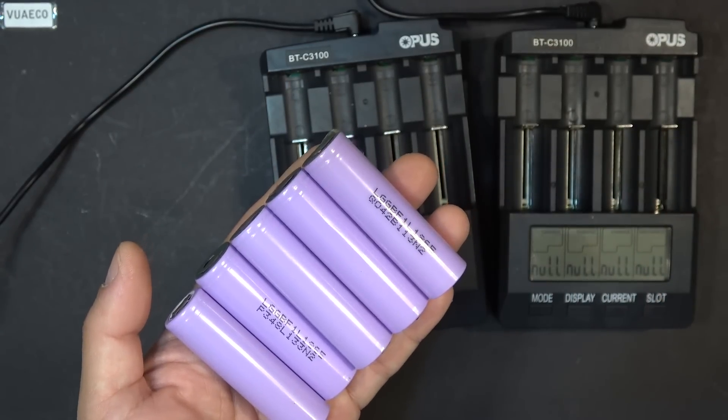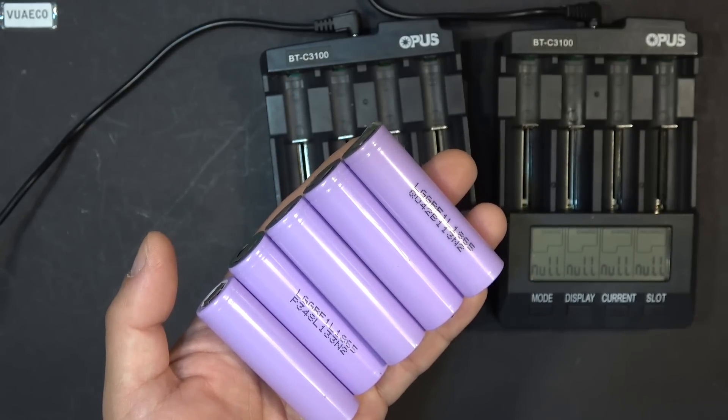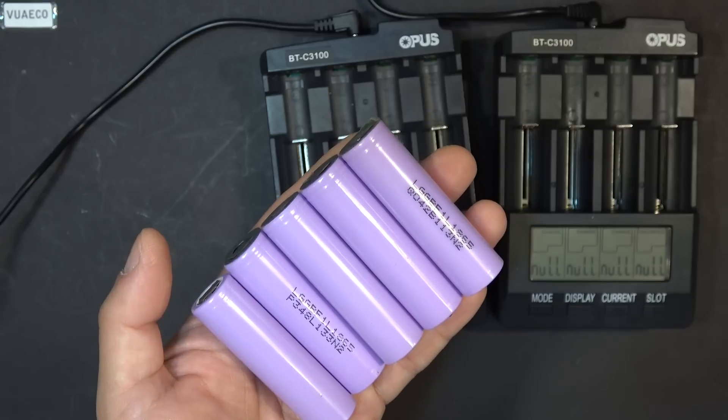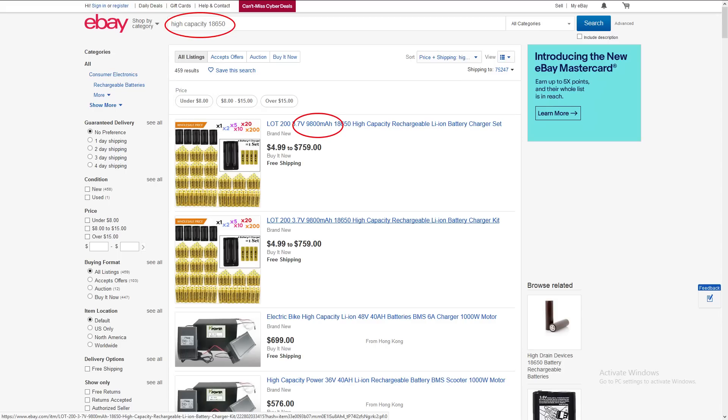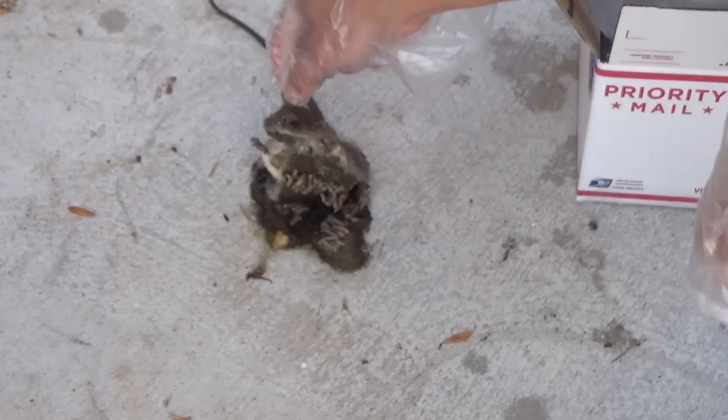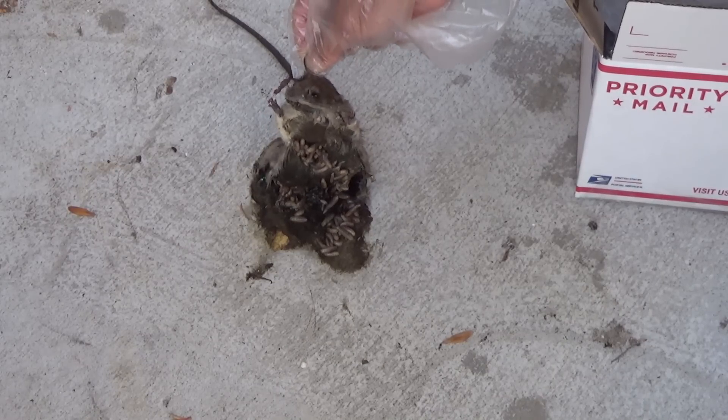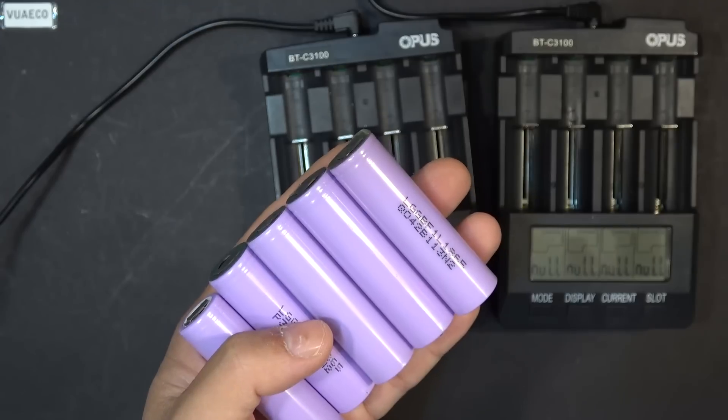And these are one of the highest capacity 18650 cells in the market today. If you look on eBay, especially from Chinese sellers, you can find 18650 cells that are up to 9,900 mAh. You know people say pigs can fly, I think pigs can also become flies, but anyway I digress.